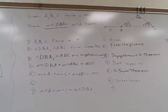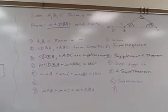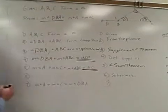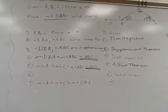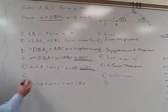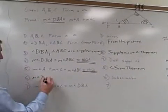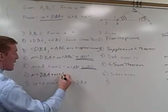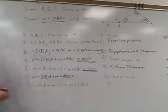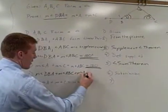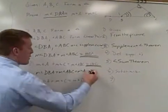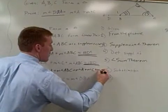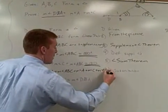I want you to look at this. I said to do substitution. Here I've got something equal to 180 degrees, and here I've got something equal to 180 degrees. You can substitute by setting them equal to each other: measure of angle DBA plus measure of angle ABC equals measure of angle A plus measure of angle C plus measure of angle ABC.